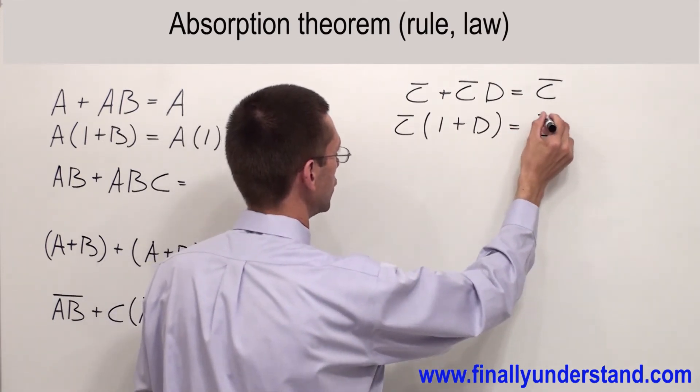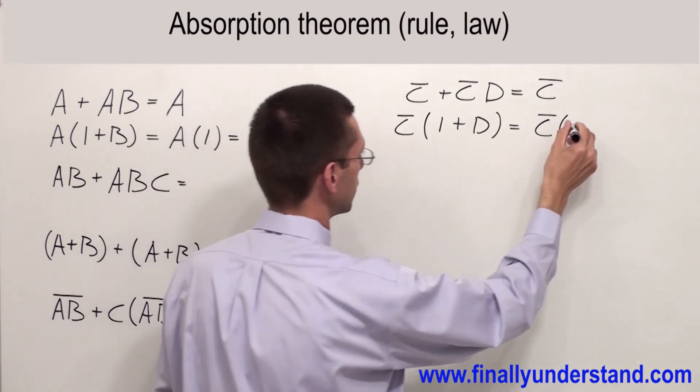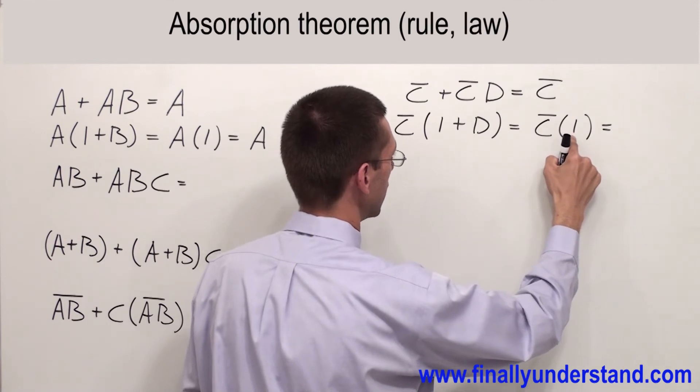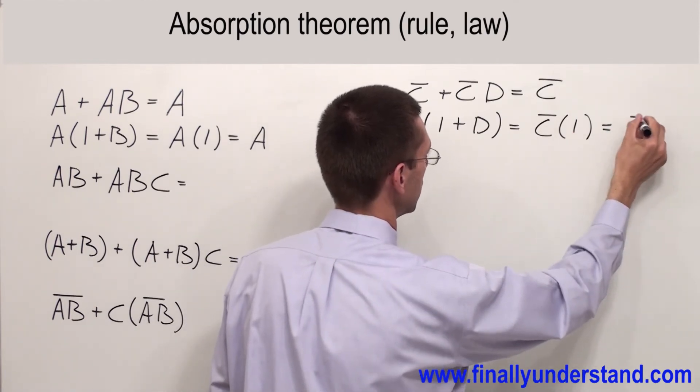So I'm going to have C NOT and 1 OR D gives me 1. C NOT and 1 is going to give me C NOT.